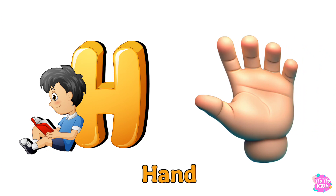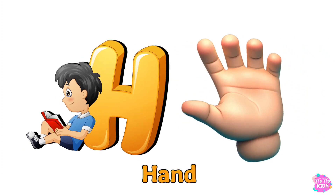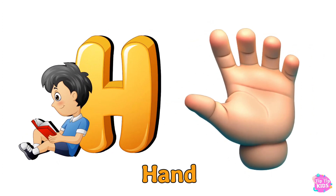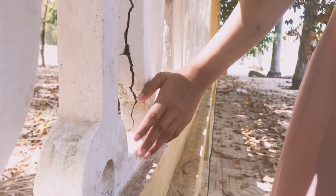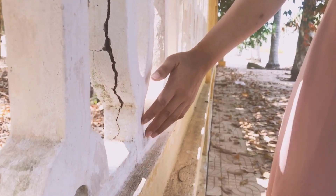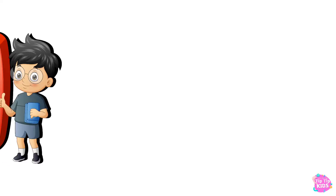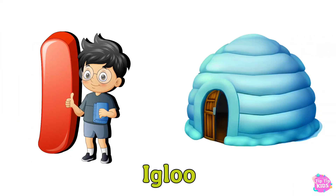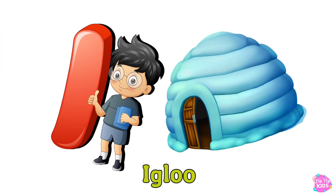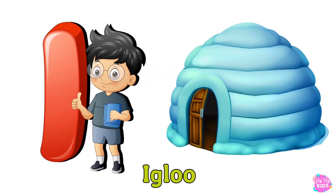Glasses. H is for Hand. H, H, Hand, H, H, Hand, H. Hand. I is for Igloo. I, I, Igloo.